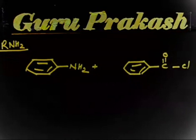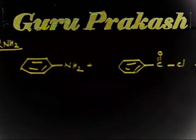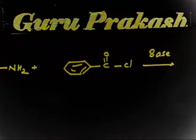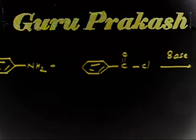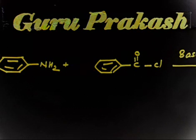You have to predict the product in this case. You have aniline (PhNH₂) on one side and an acid chloride (PhCOCl) on the other side. Some bases are also given to you, so you have to write down the product. One side you have an amine and the other is acid chloride — this reaction we have discussed in the chapter on acid derivatives.